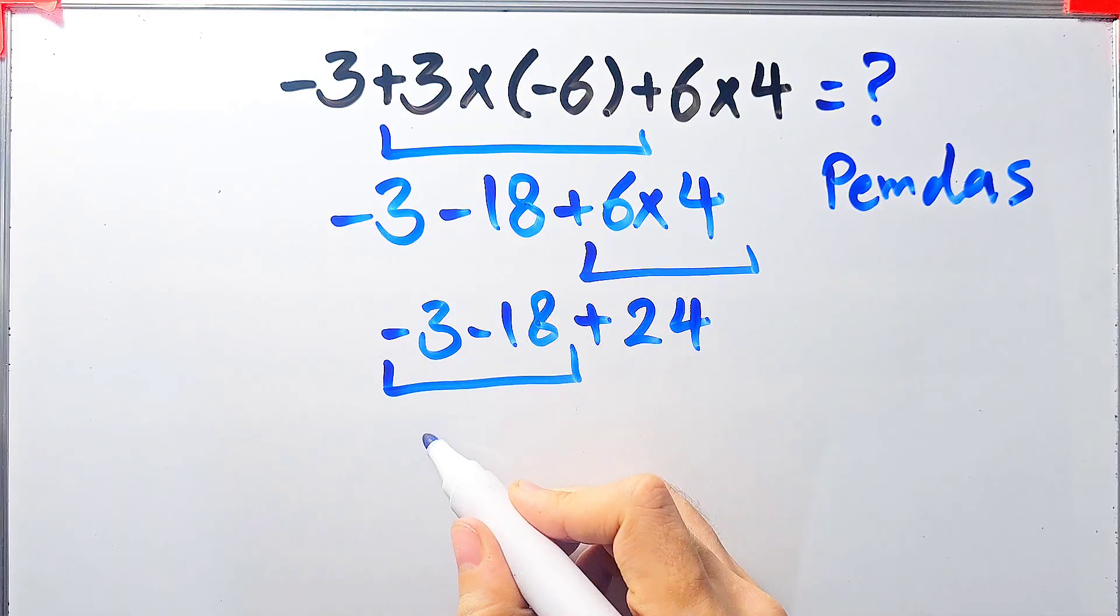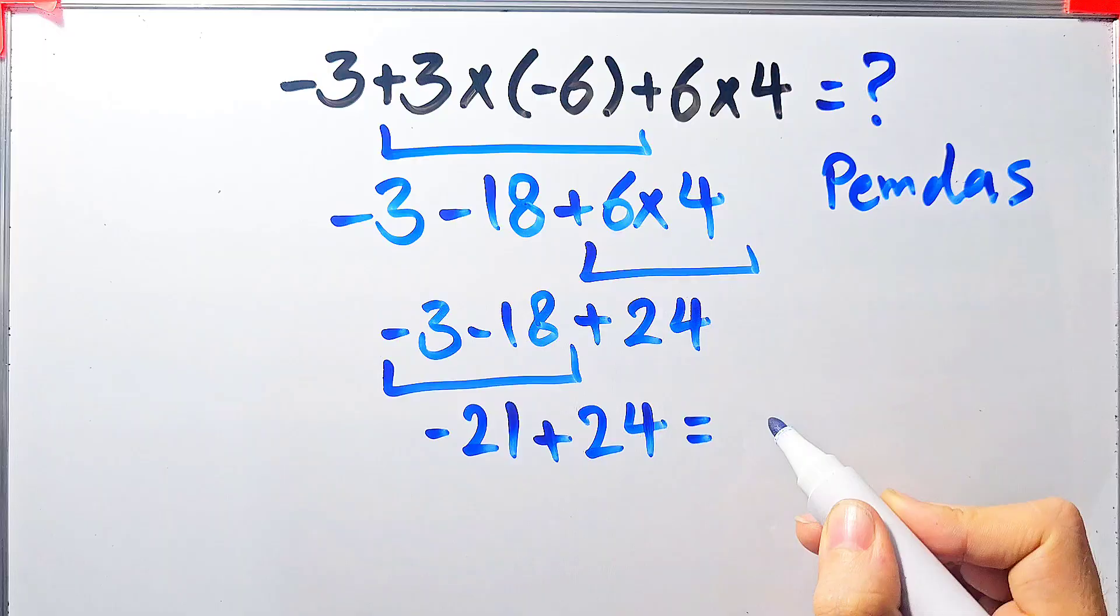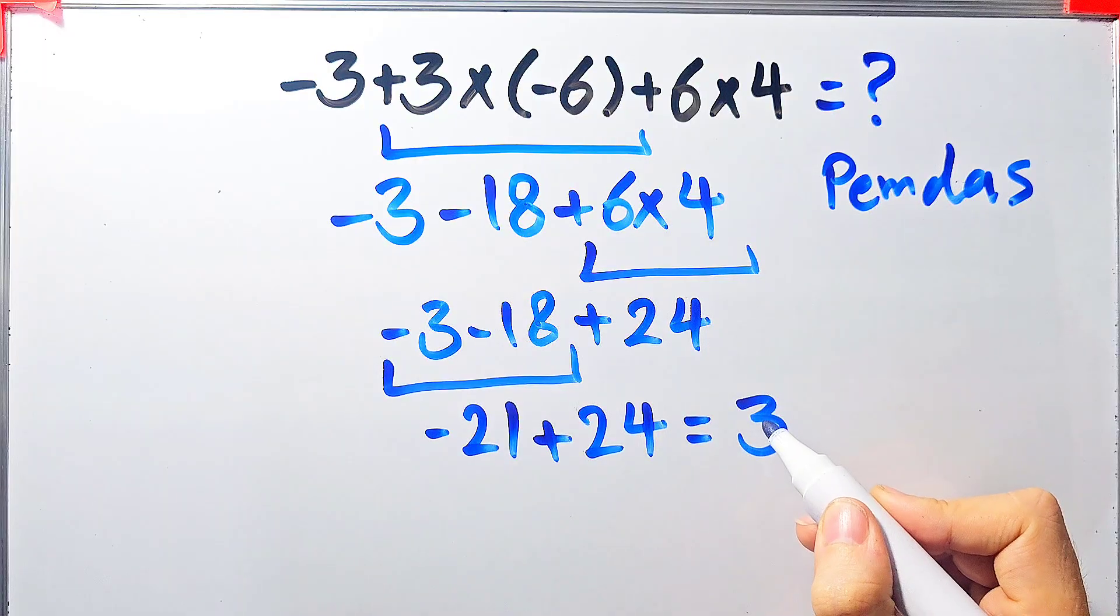Negative 3 minus 18 equals negative 21. Now we have negative 21 plus 24. Negative 21 plus 24 equals 3.